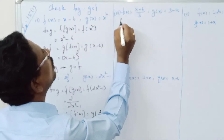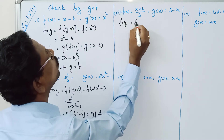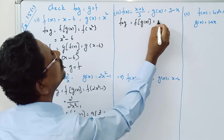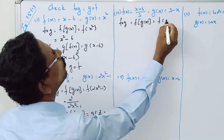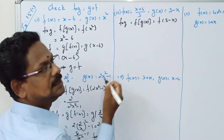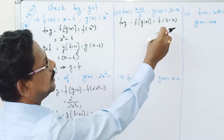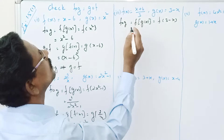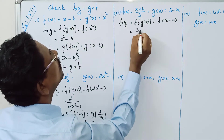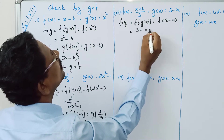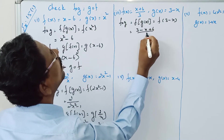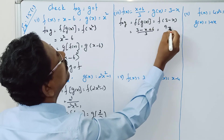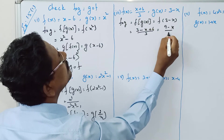Now F composition G — that is F of G of X — is equal to F of 3 minus X. Since F of X equals (X plus 6) divided by 3, that is equal to 3 minus X plus 6, divided by 3, which equals 9 minus X divided by 3.